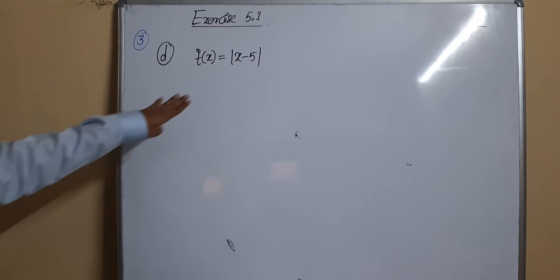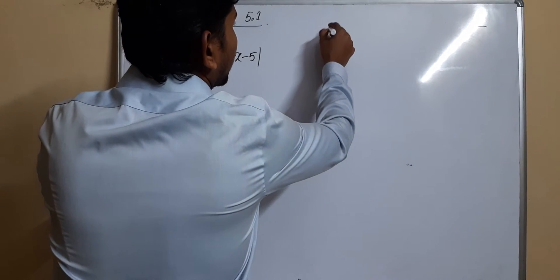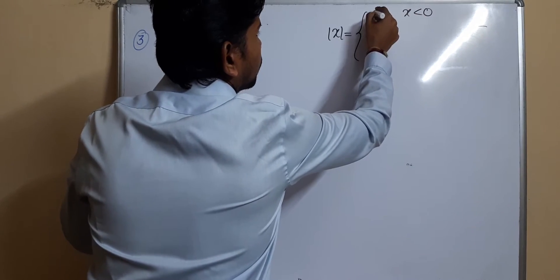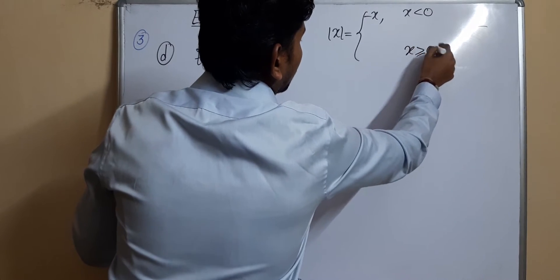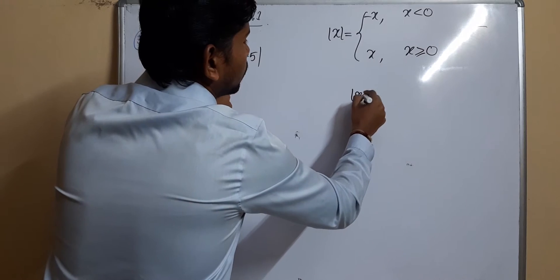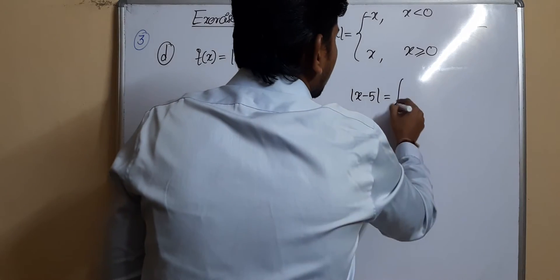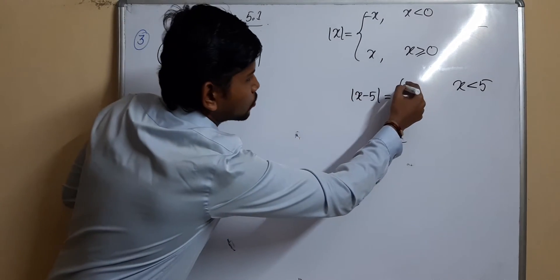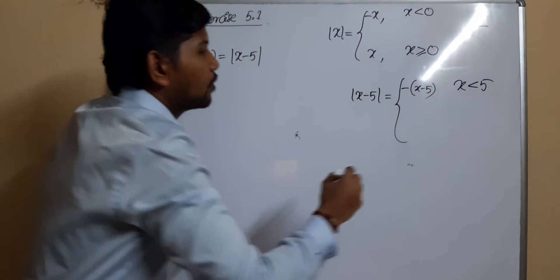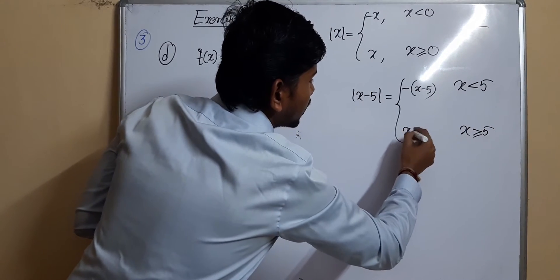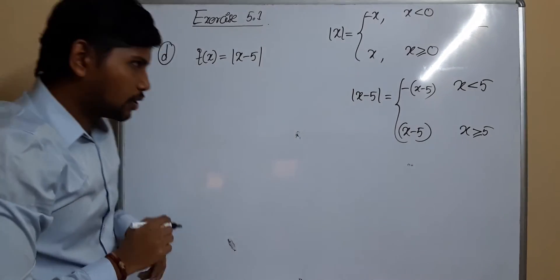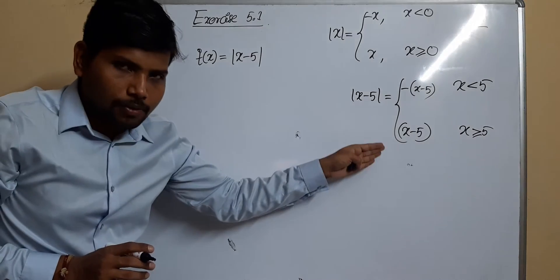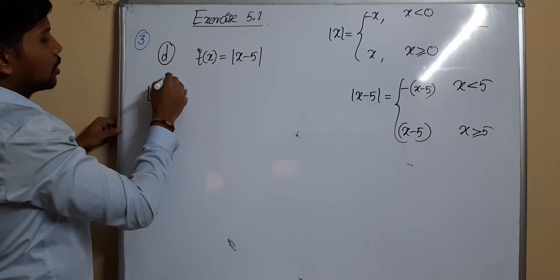For f(x) = |x − 5|, recall from the functions chapter that the modulus function is defined as: negative x when x < 0, and x when x ≥ 0. Similarly, |x − 5| is defined as −(x − 5) when x < 5 (since the expression is negative), and (x − 5) when x ≥ 5. The function changes value at x = 5, so we must check LHL and RHL there.